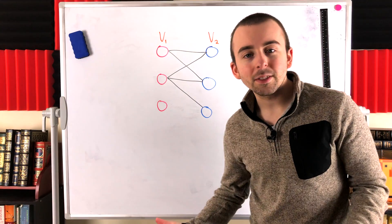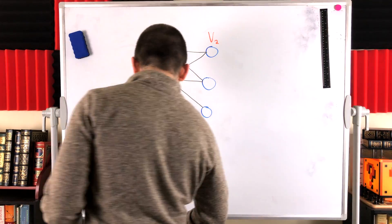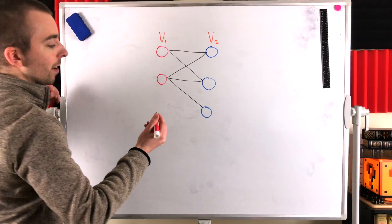Only problem is, a bit of a downside, is we've lost the uniqueness of the partitioning. We could put this vertex here in V1, but since it's isolated, it doesn't matter where it goes. We could just as well put it in V2.